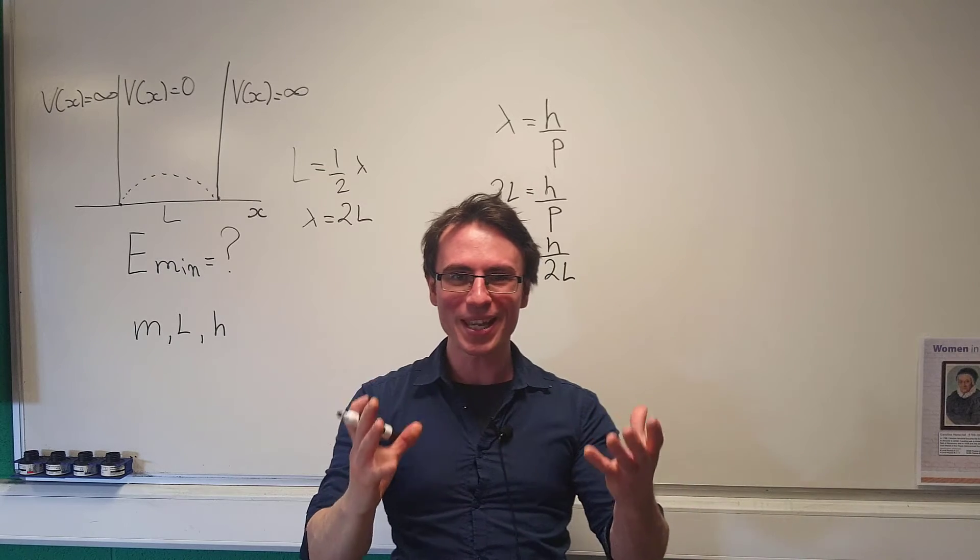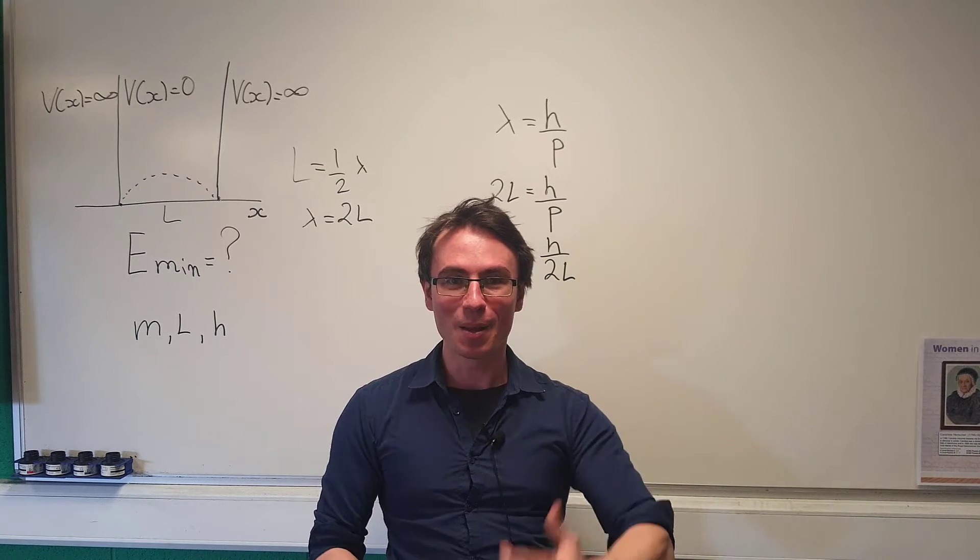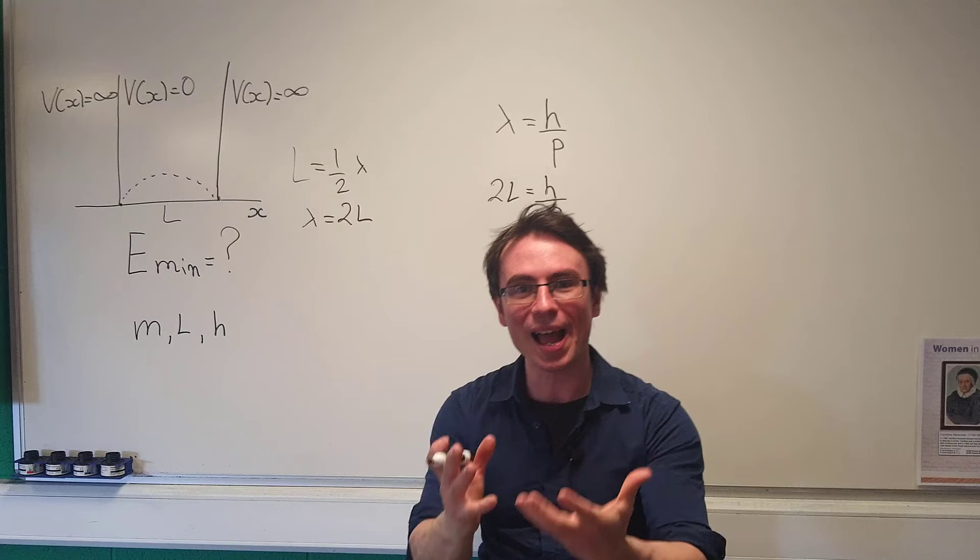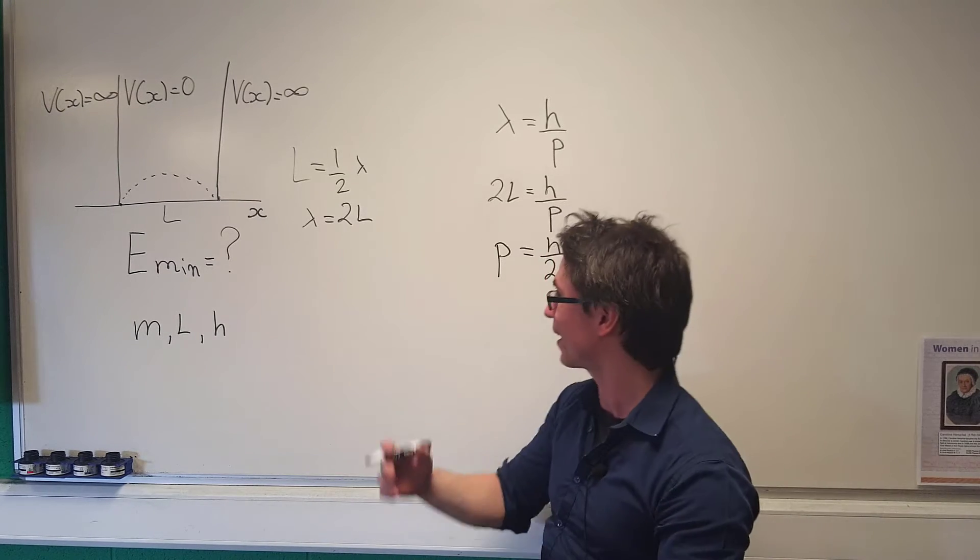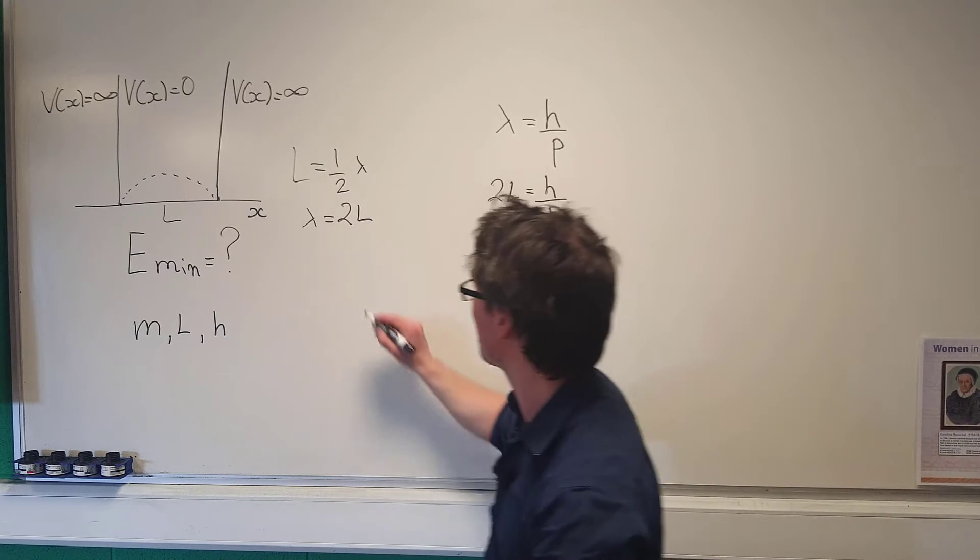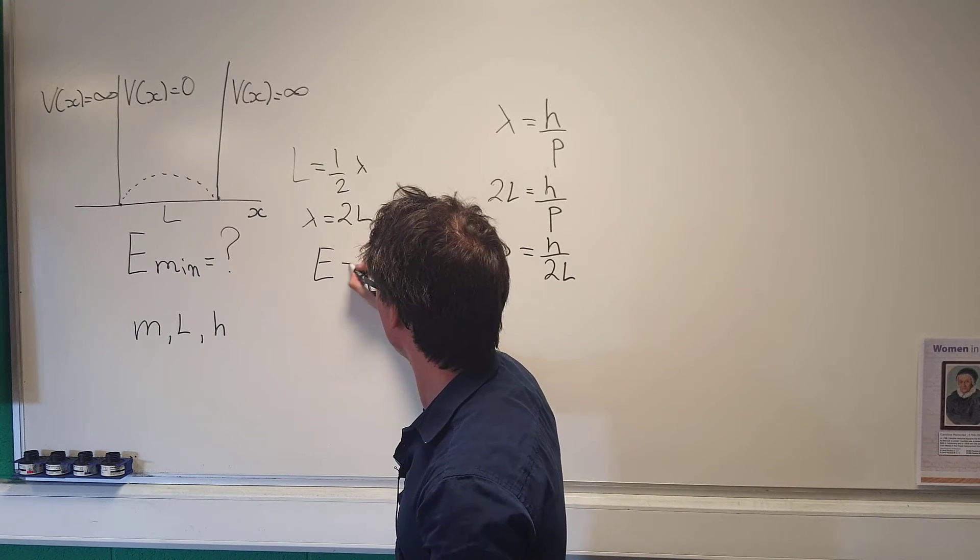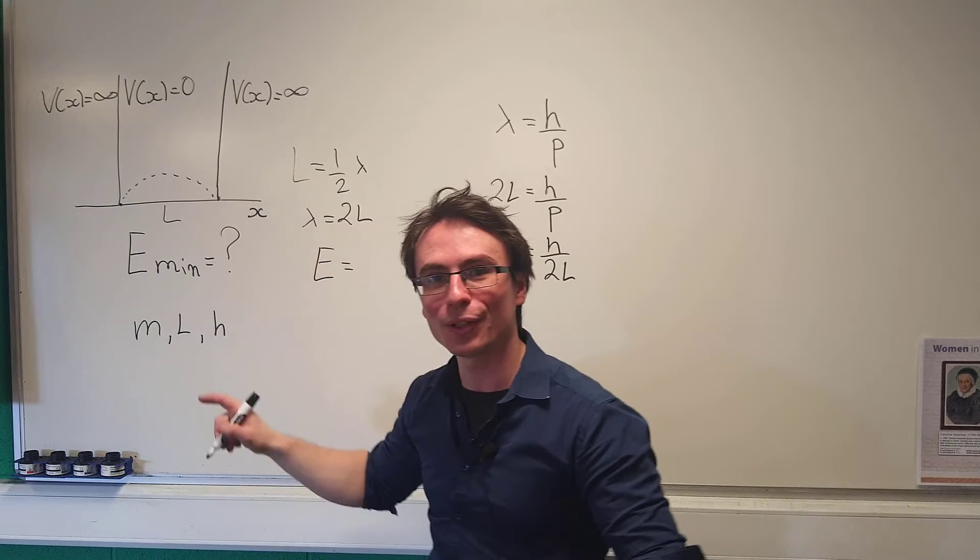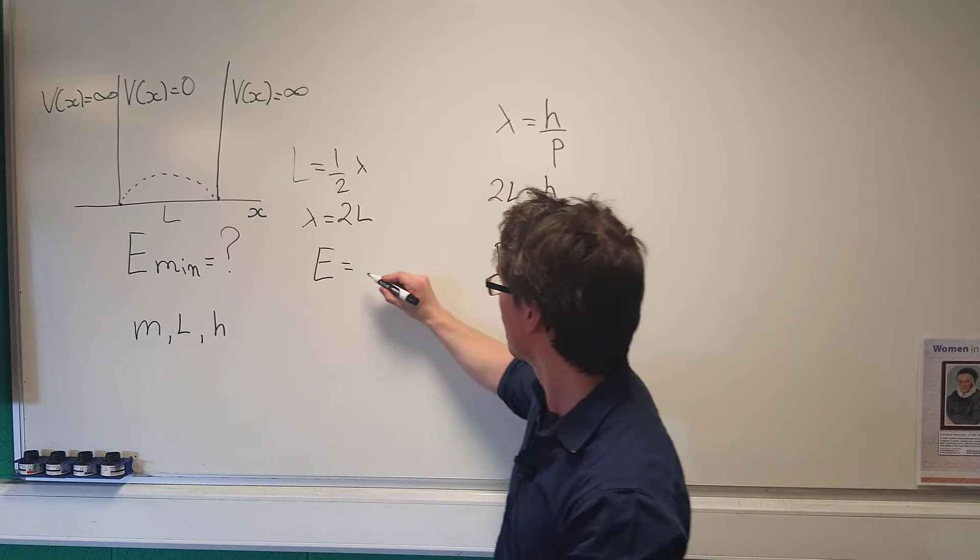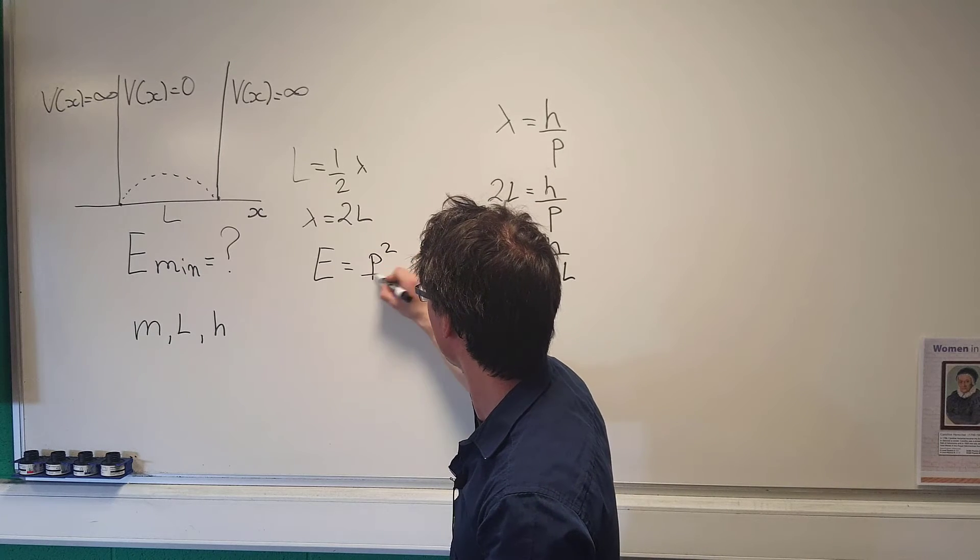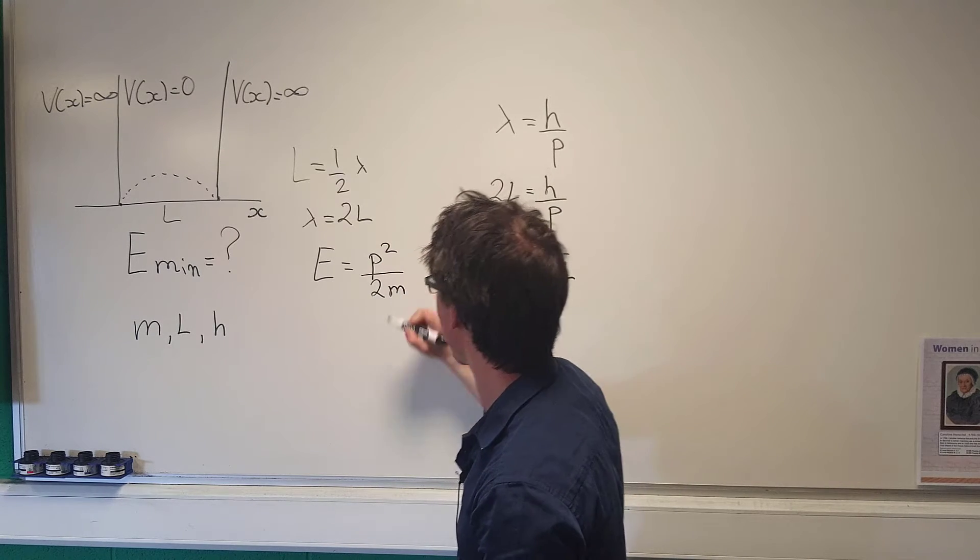So now we have the momentum, but remember, if we have the momentum and the mass, we could easily find the lowest energy because all we need to remember is that the kinetic energy—and inside of this box is only kinetic energy because the potential inside is zero—will be given by p squared over 2m.